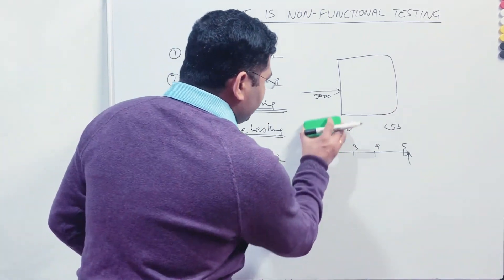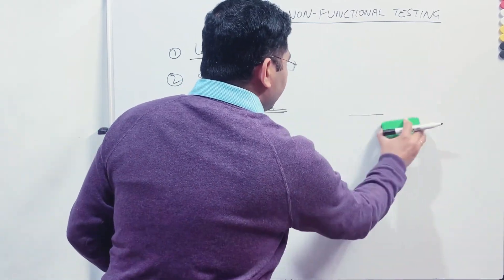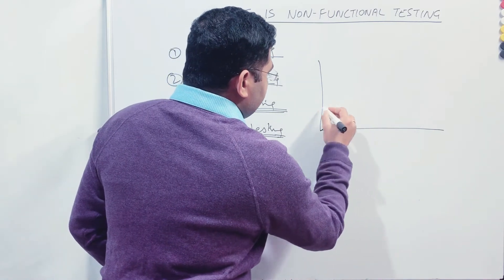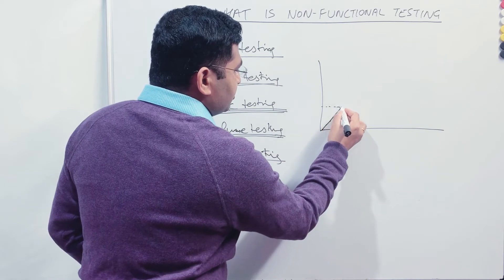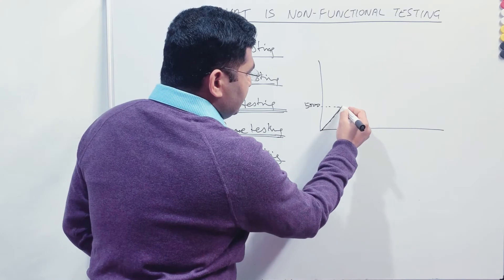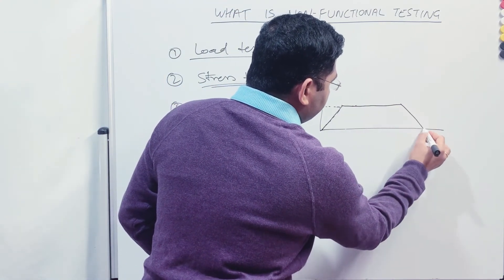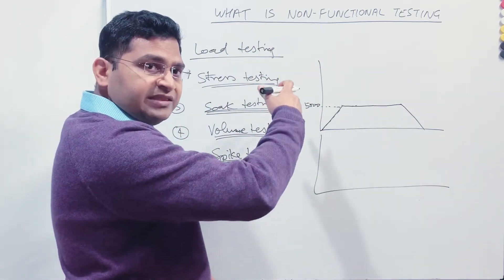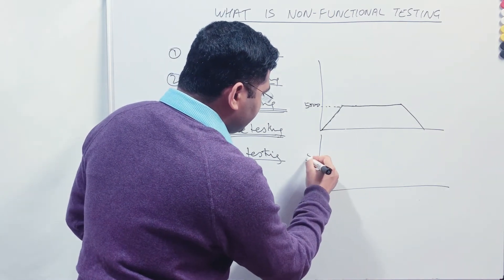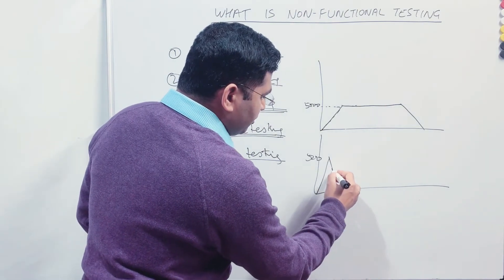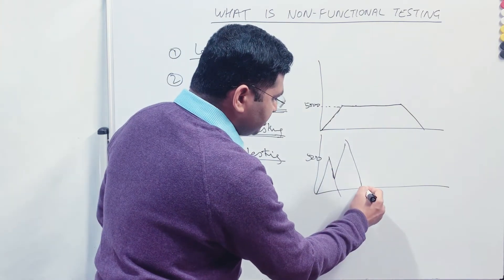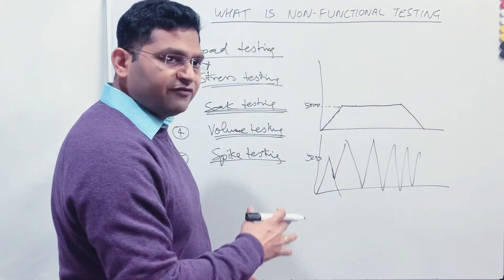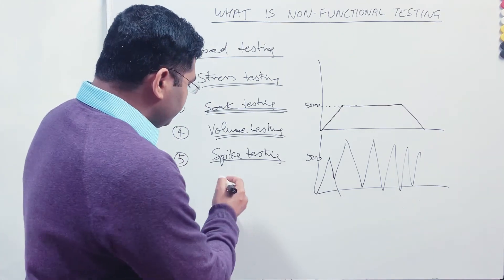Spike testing is another type of non-functional testing. In load testing, we have a gradual ramp-up to 5,000 users, run the test, then ramp down. In spike testing, what happens is there are sudden spikes of users and then sudden reductions. Suddenly there will be 5,000 users, then reduced to near zero, then a sudden increase to 10,000, then reduction to zero again. There is a spike of users on the application followed by a reduction, and you verify how the application performs in that particular scenario. That is spike testing.